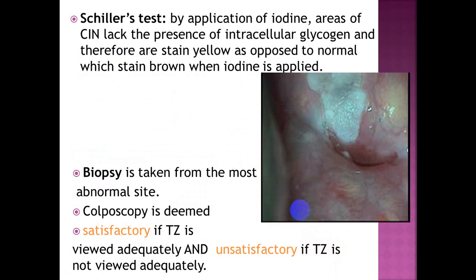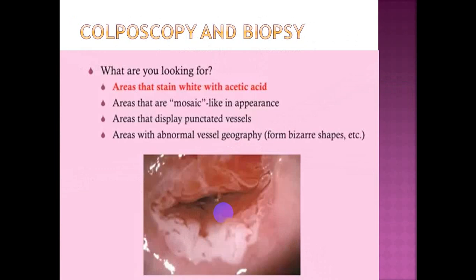The Schiller test involves application of iodine. Areas of CIN lack intracellular glycogen and therefore stain yellow, as opposed to normal tissue which stains brown when iodine is applied. The biopsies are taken from the most abnormal area. Colposcopy is deemed satisfactory if the transformation zone is adequately viewed, and unsatisfactory if not.